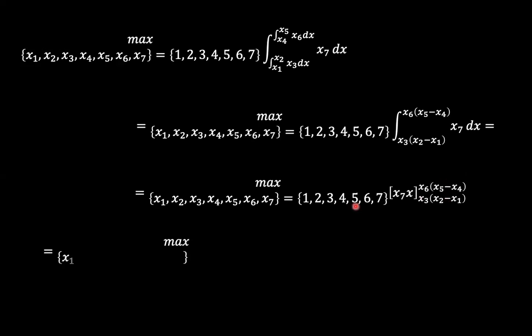And we do have the final expression be x7 times x with these appropriate lower and upper limits. So eventually you have an expression where we have a maximum of x1, x2, x3, x4, x5, x6 picked out of 1, 2, 3, 4, 5, 6, 7. And so the final expression, which is x7 times in bracket x6 times x5 minus x4 minus x3 times x2 minus x1.